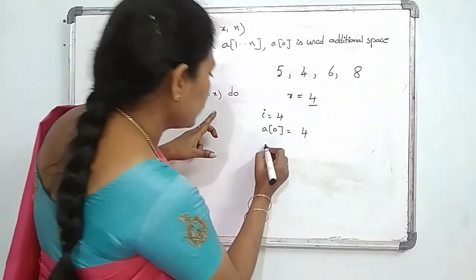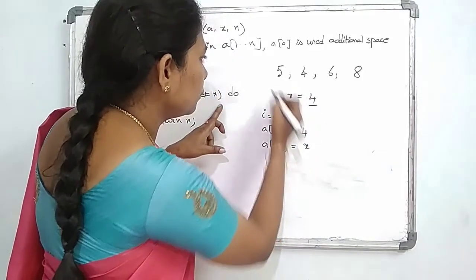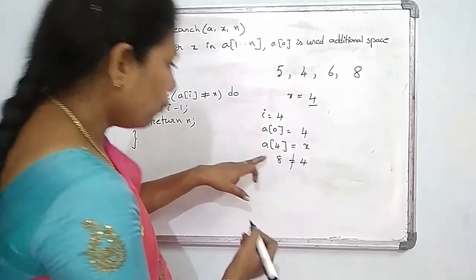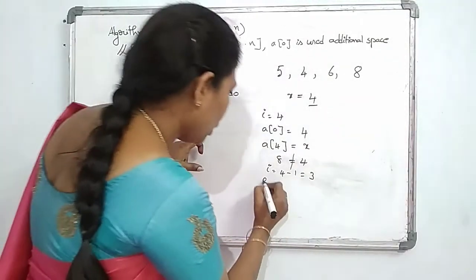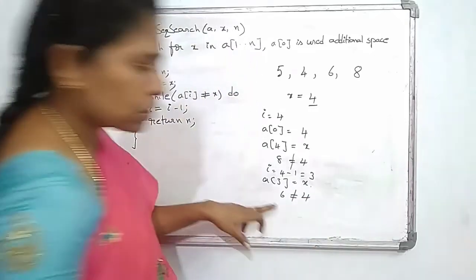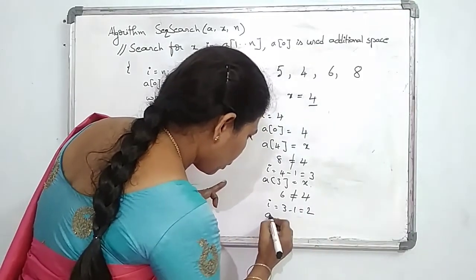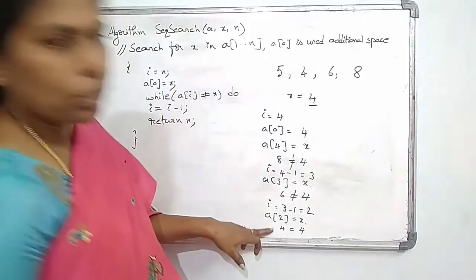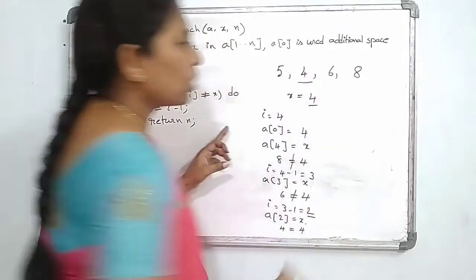While A of I is not equal to X: A of 4 is 8, and 8 is not equal to 4. So we decrement I: 4 minus 1 equals 3. Again in the loop, A of 3 is 6, and 6 is not equal to 4. Decrement again: 3 minus 1 equals 2. A of 2 is 4, and 4 equals 4. When this condition is equal, we return the value of N. Now N value is 2 — at position 2 we found the element. Sequentially we found the element.